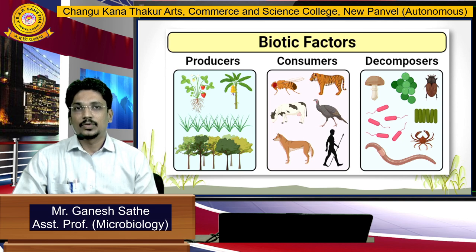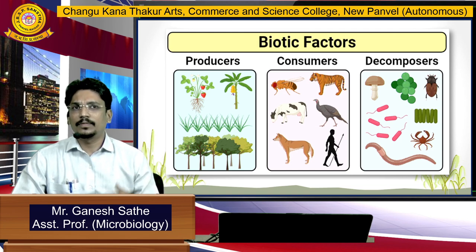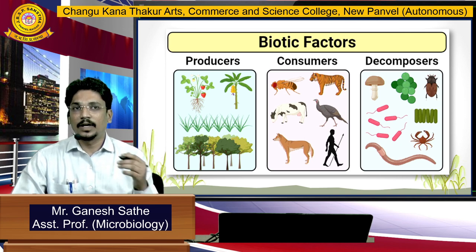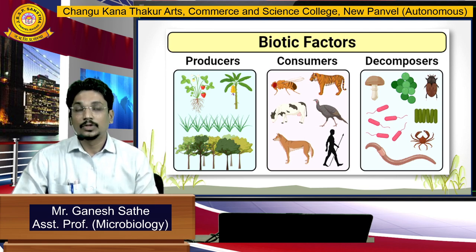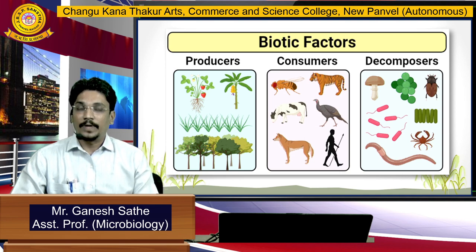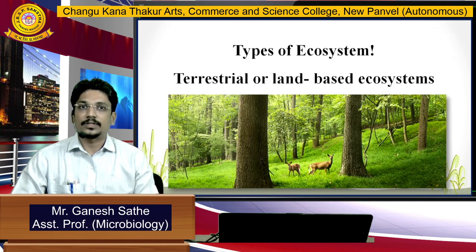We consume the products synthesized by plants as food, so all human beings, all animals, and all birds are consumers. After consumption, we release dead decaying matter, and for decomposition there are different microbiological entities — it includes bacteria, fungi, and some insects. So these are the two important factors of ecosystem: biotic factors and abiotic factors.